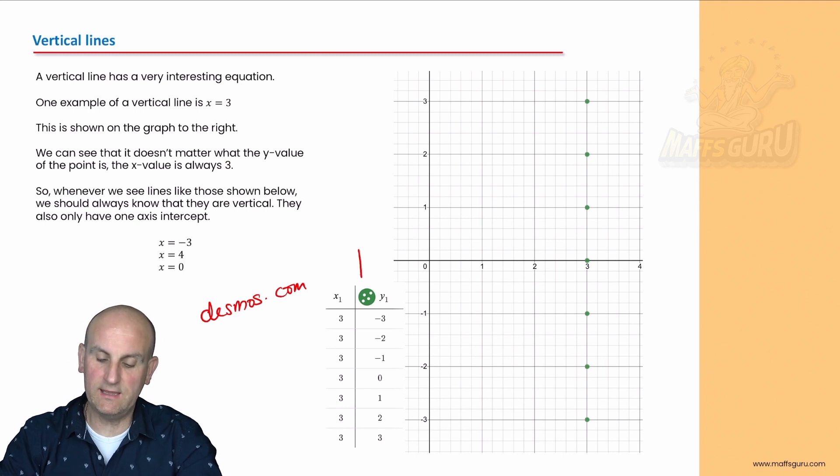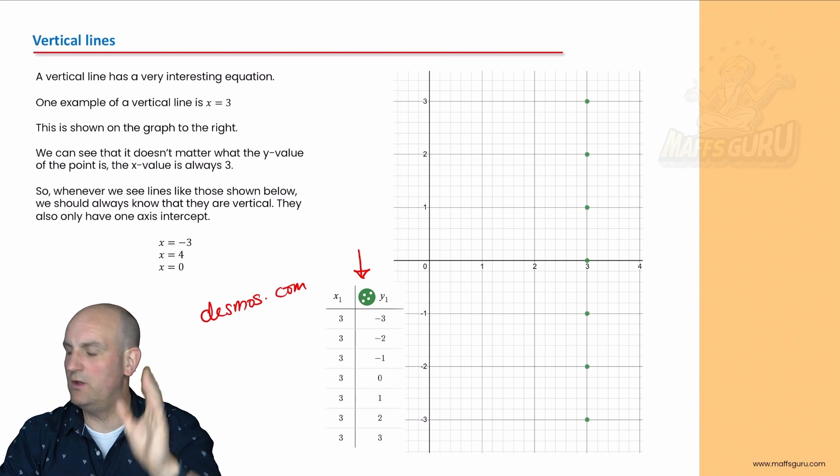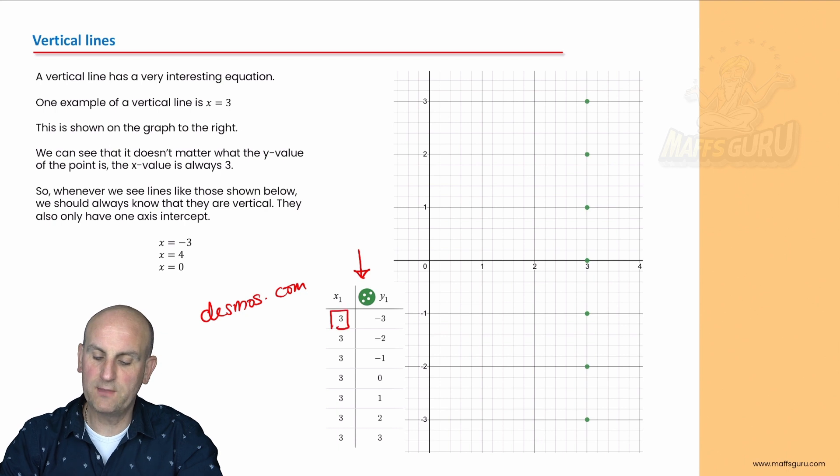I've used my favorite software program desmos.com to plot these points. If we look at my table, I've got my x column first and then my y column. My x value of 3, y value of minus 3, so x value of 3 across and 3 down.